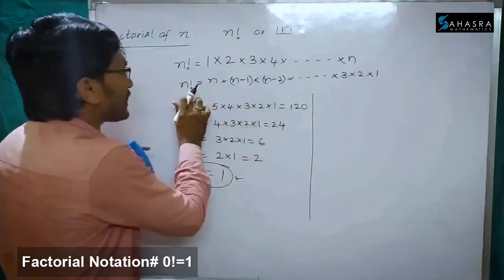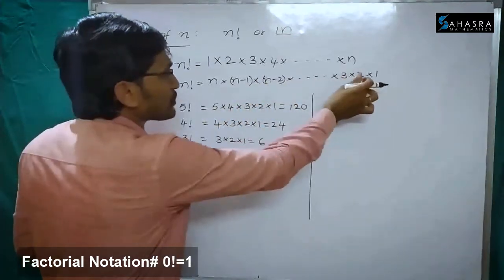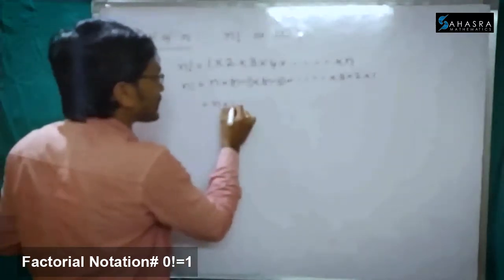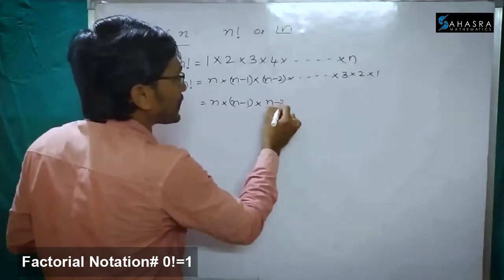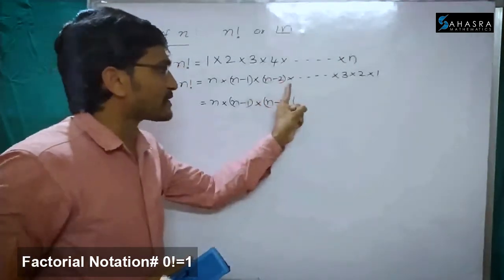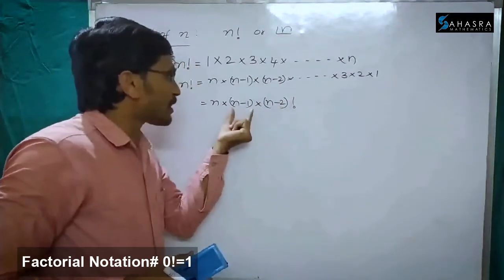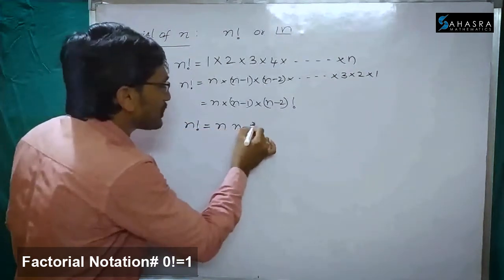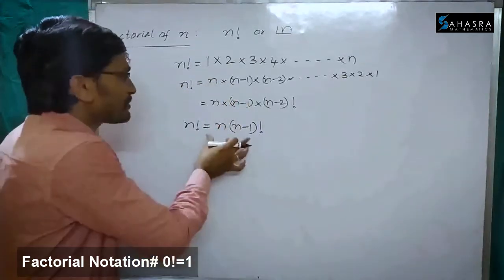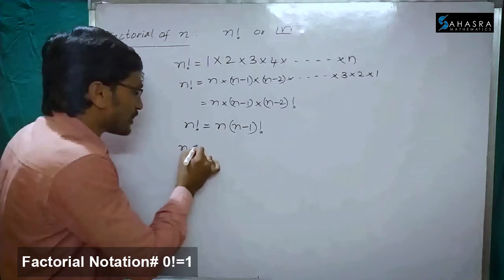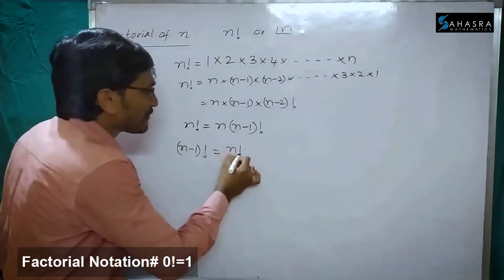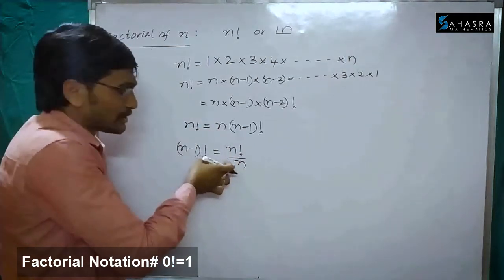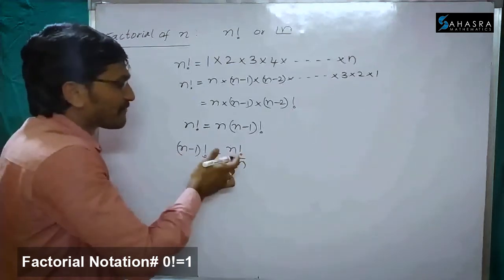We already know n factorial is equal to n into n minus 1 into n minus 2 into and so on, 3 into 2 into 1. We can write this as n into n minus 1 factorial. If we want to stop up to n minus 1, we can write: n factorial is equal to n into n minus 1 factorial. From this, n minus 1 factorial is equal to n factorial divided by n, because n is multiplying here and moves to the denominator.